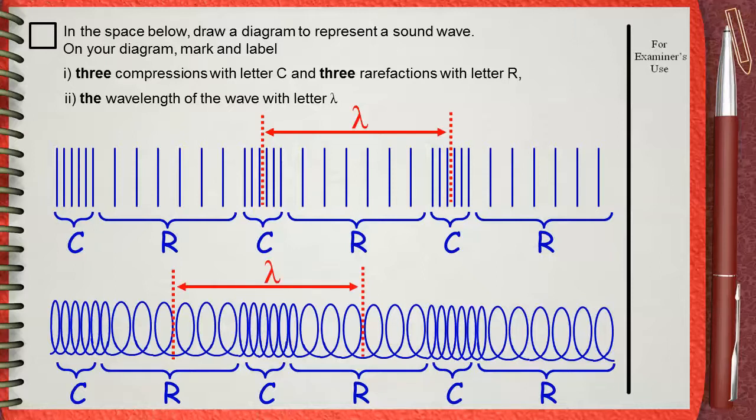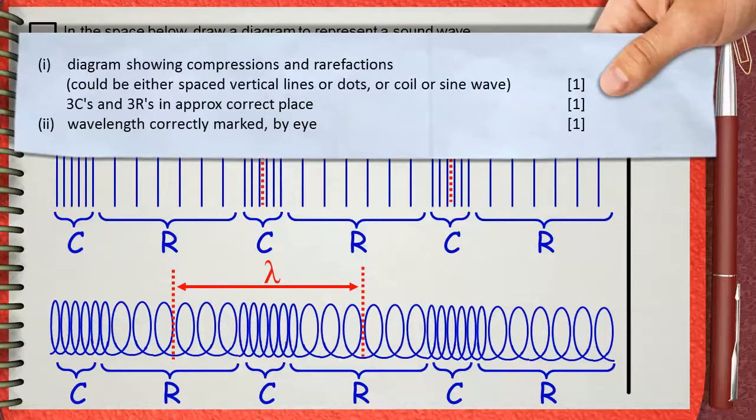The mark scheme gives three marks for both questions: two marks for drawing the wave, and one mark for marking the wavelength.